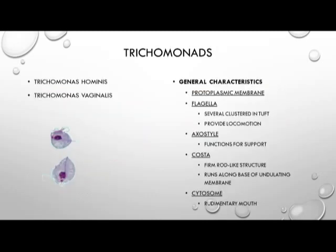Next we jump into the Trichomonas, which are also a member of class Mastigophora. Clinically relevant are Trichomonas hominis and Trichomonas vaginalis. The general characteristics include a protoplasmic membrane, flagella with several clustered in a tuft which serve as locomotion, an axostyle which functions for support, and a costa — a firm rod-like structure which runs along the base of the undulating membrane. These organisms also have a cytosome, which is a rudimentary mouth.